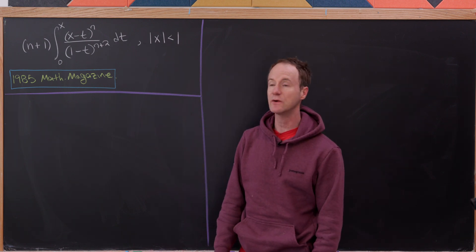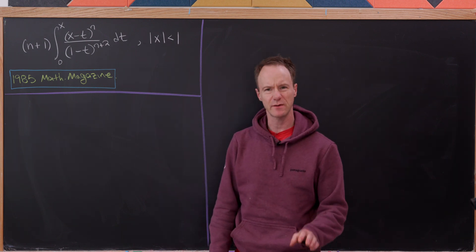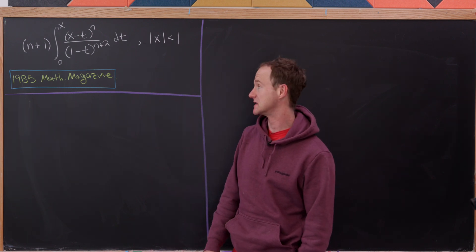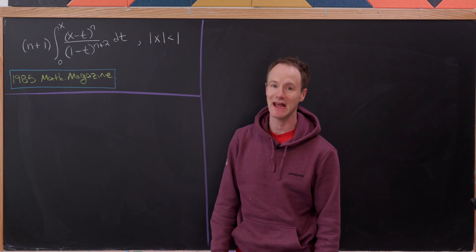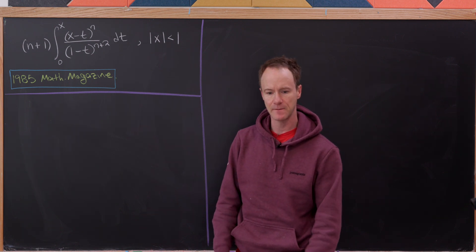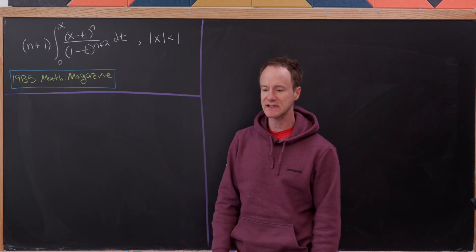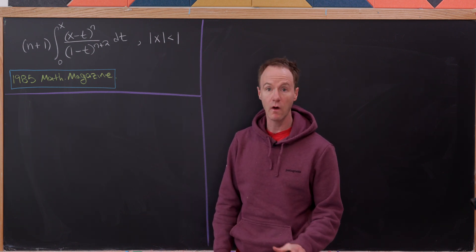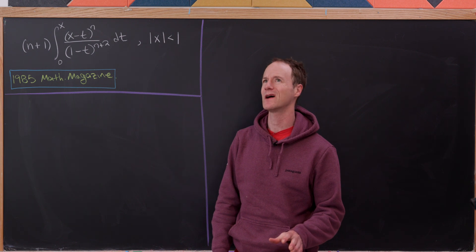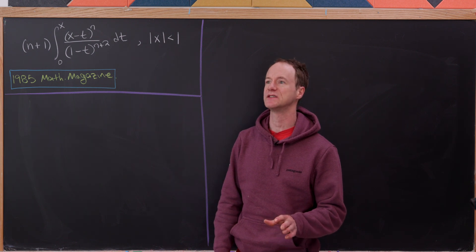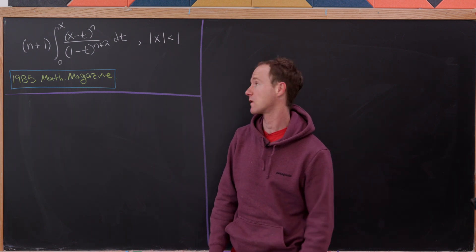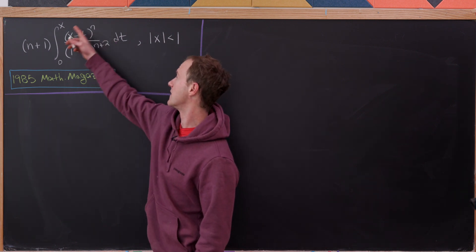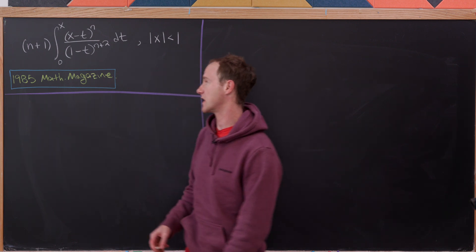Today we're going to look at a nice sequence of integrals that was in an issue of Math Magazine from 1985. The idea here is to find a closed form — or really a simpler closed form — of this object right here.